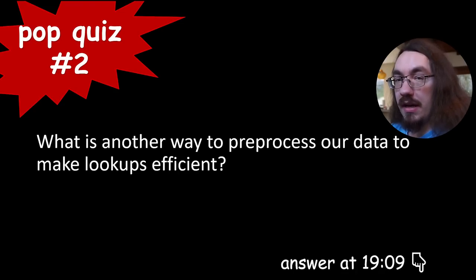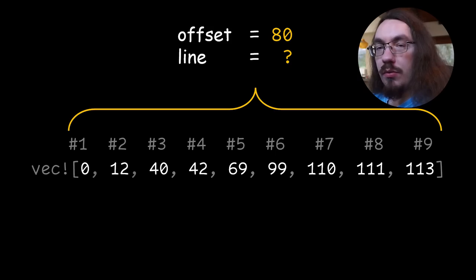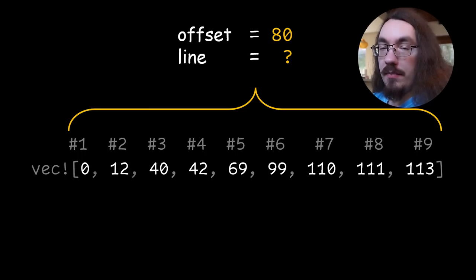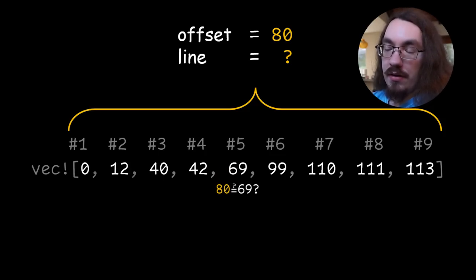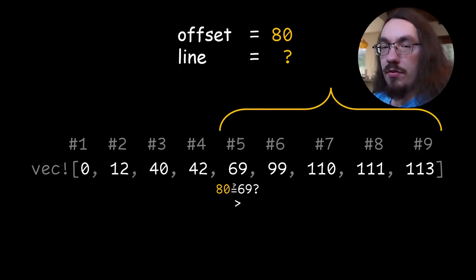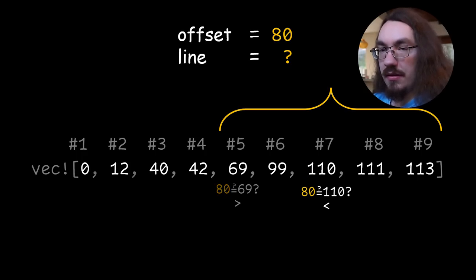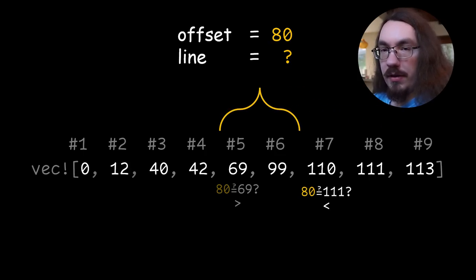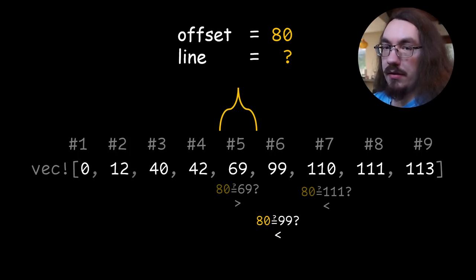Pop quiz: what's a different way to pre-process the data that could make lookups even faster? Let's look at our line table again, this time using a different algorithm to search through it — binary search instead of going left to right. A binary search keeps track of a range of possible answers. You start with the full vector length. Check the middle element: is 80 greater than, less than, or equal to 69? It's greater than, so nothing on the left could be the answer. We set the left end of our range to the middle element, then pick the middle of the new range (110), compare to 80. 80 is less than 110, so we set the right end. Our range now has only one element — that's the answer.